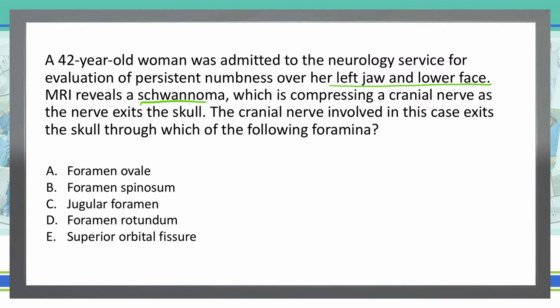Cranial nerve 5 divisions come out respectively using the mnemonic standing room only. Standing room only is the mnemonic for the three foramina that the trigeminal nerve divisions will come out of. S is for superior orbital fissure, R in room is for foramen rotundum, and O is for foramen ovale.